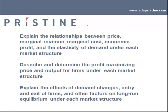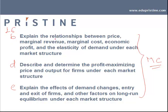In this video, we will talk about three different LOS: 16B, 16D, and 16E of economics. All these LOS are related to monopolistic competition. In LOS 16B, we will understand the relationship between price, marginal revenue, marginal cost, economic profit, and elasticity of demand. In 16D, we will determine the profit maximizing price and output. In 16E, we will understand the effects of demand changes, entry and exit of firms, and other factors affecting long run equilibrium.